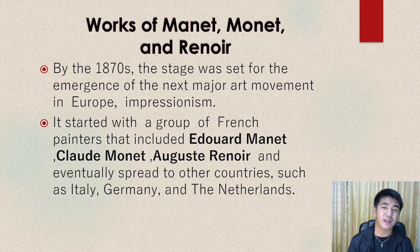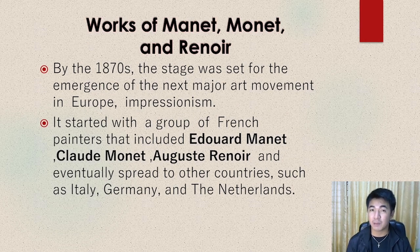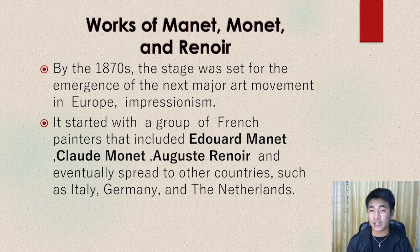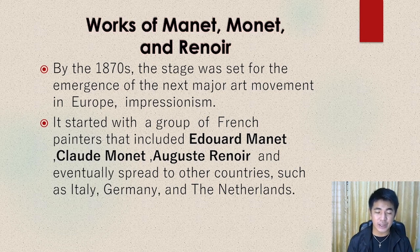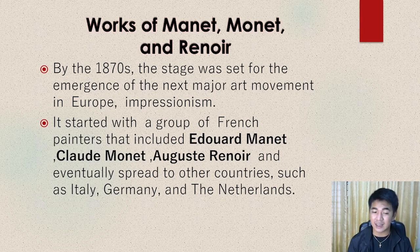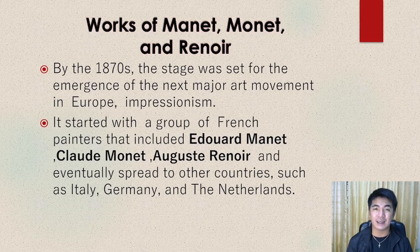After the characteristics, let's meet the different artists under impressionism. We have works of Manet, Monet, and Renoir. By the 1870s, the stage was set for the emergence of impressionism in Europe. It started with a group of French painters that included Edouard Manet, Claude Monet, and Auguste Renoir, and eventually spread to other countries such as Italy, Germany, and the Netherlands. The influence of Western countries in the field of arts is enormous, and they led the creation of the art movement we call impressionism.